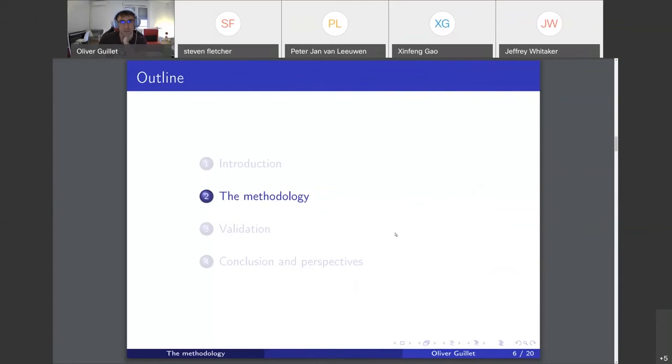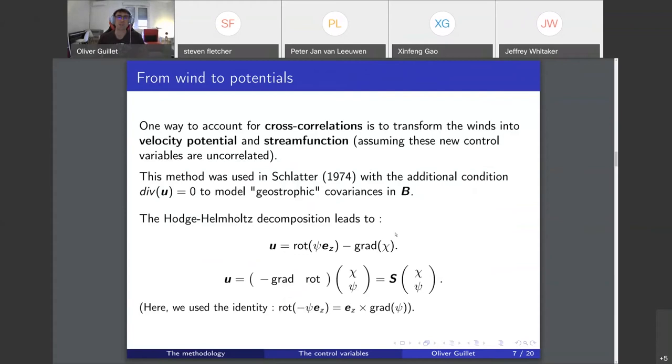Let's talk about the methodology. One way to account for cross-correlation is to transform the winds, the u and v components, into two other components that are less correlated. We assume those would be the velocity potential and the stream functions. This method was used in an article from Schlatter in 1974 with the additional condition that the divergence of the wind is zero to model geostrophic covariances in B.